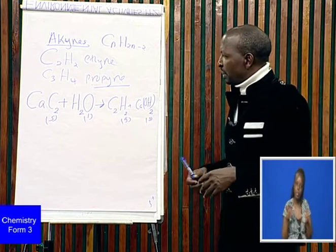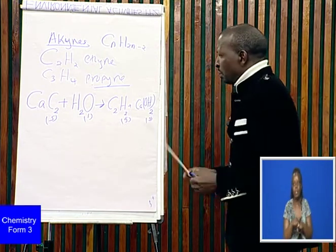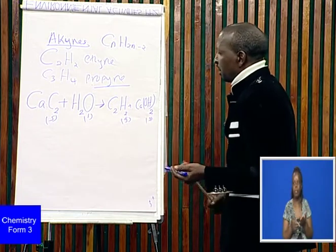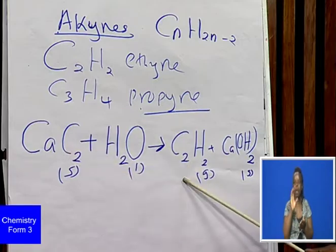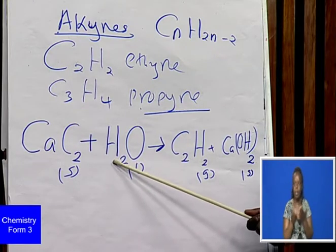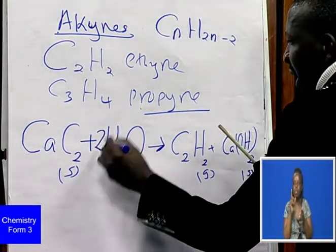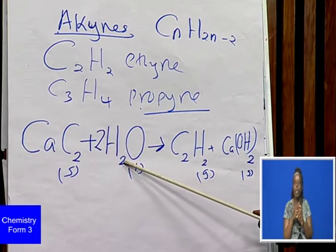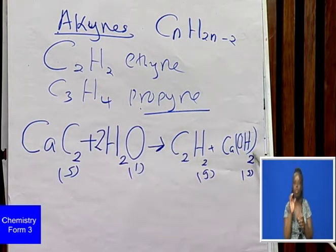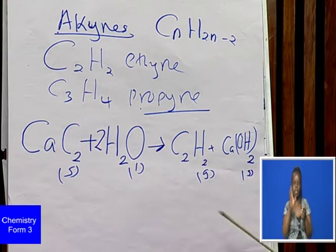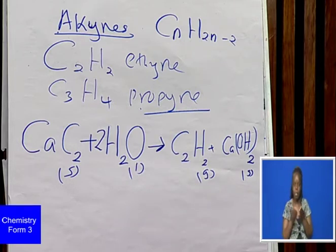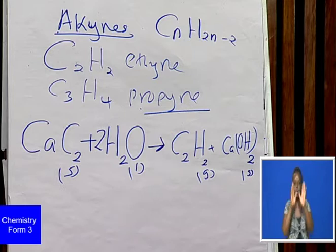Let's balance the equation. Calcium: one on each side. Carbon: two on each side. Hydrogen: we have two on the left; on the right we have two plus two, that is four, so we put a two in front of water. Oxygens: two on each side — the equation is balanced. When writing an equation it must be balanced and must have the correct state symbols. Those are the fundamental rules of writing an equation.